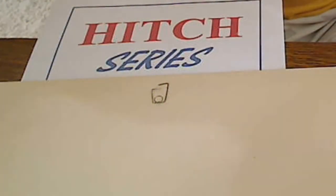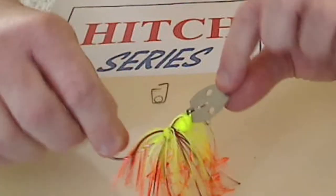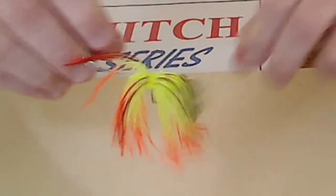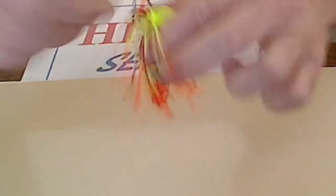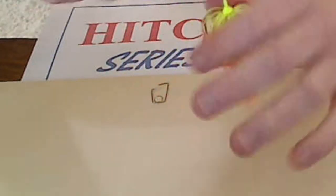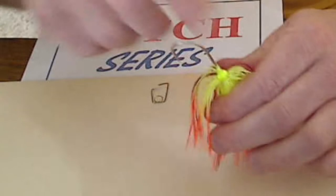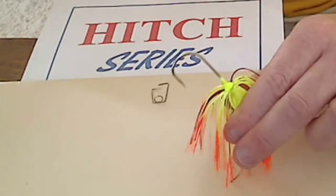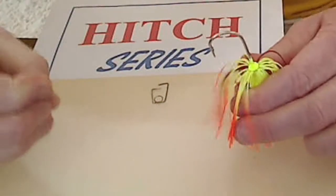Another application where the trailer hitch will help you is with these bladed jigs, or chatterbait-style baits. A lot of guys are putting trailers on the back of here, and one of the problems is that it doesn't really have a keeper on there. With the trailer hitch, you can add your own.